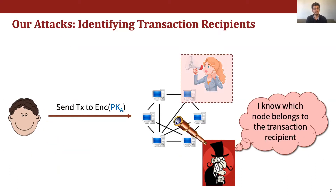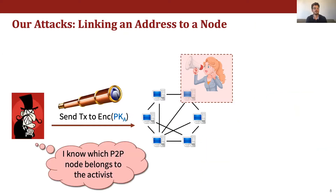And yet in our work, we show remote side-channel attacks that break the strong cryptographic zero-knowledge guarantees. When a transaction is sent into the network, we show how an attacker that participates in the peer-to-peer protocol can discover which peer-to-peer node belongs to the transaction's recipient, thus breaking the unlinkability of the system's transactions. This also means that an adversary who obtains the activist's public key from her blog can figure out which peer-to-peer node she uses, and so the adversary can re-identify Alice and learn about all the transactions being sent to her.